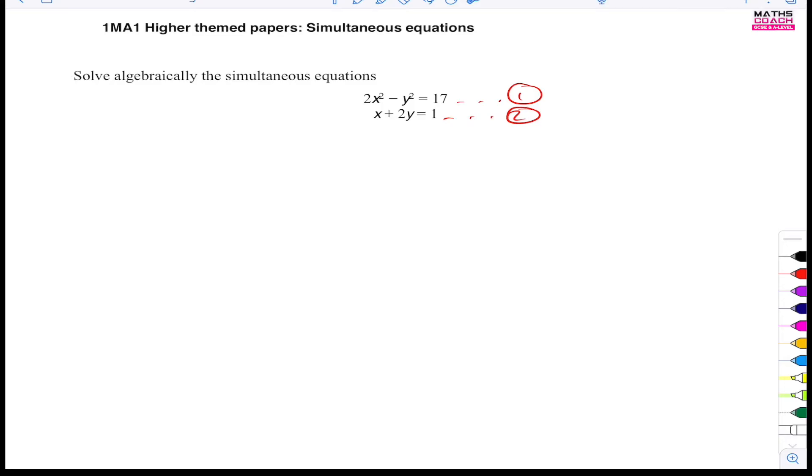So in this case, you can see it's easier to make x the subject because it's already isolated by taking this 2y over to the other side. So what does that mean? That means x would be equal to 1 minus 2y.